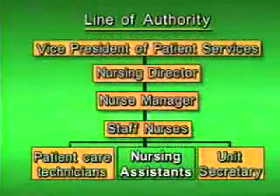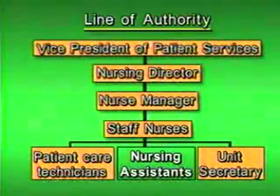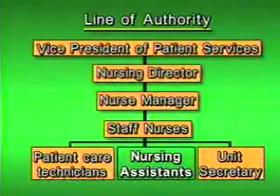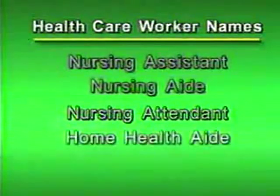Everyone on the health care team needs to be able to do their job to the best of their ability in a spirit of cooperation. You will be working immediately under the supervision of a registered nurse, and you will be working cooperatively with others on the health care team. There are many different organizational structures and lines of authority in various facilities. On the screen you will see an example of a commonly used one. Notice that you, the nursing assistant, along with the unit secretary and patient care technician, will be answering to a staff nurse. Many names — nursing assistant, nurse aide, nursing attendant, home health aide, and orderly — are used when referring to a health care worker carrying out the basic bedside functions.